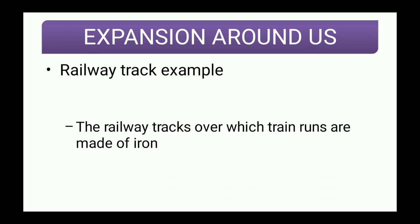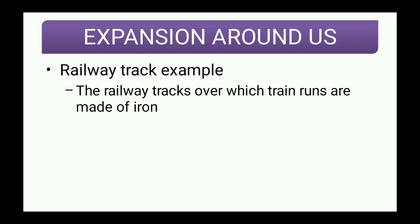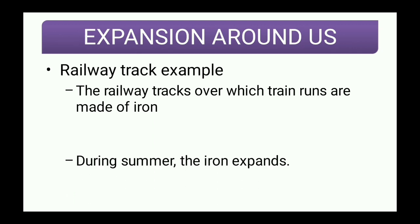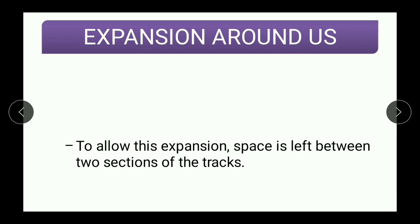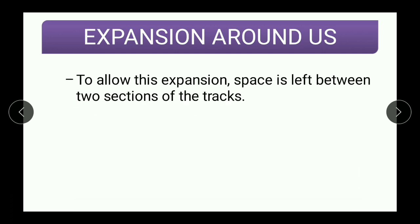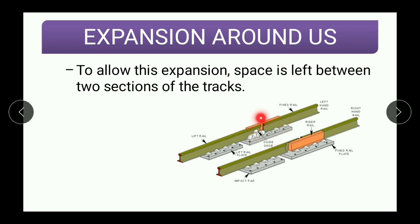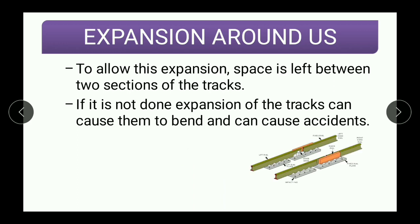Now let us see a famous example of railway tracks. The railway tracks over which trains run are made of iron. During summer, iron expands. To allow this expansion, space is left between two sections of the tracks. Here, if you can see the picture, there is a gap left between two sections of the track. This gap is kept to allow expansion, because if it is not done, expansion of the tracks can cause them to bend and cause accidents.